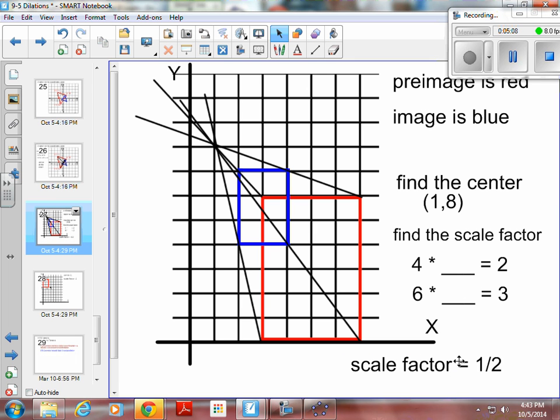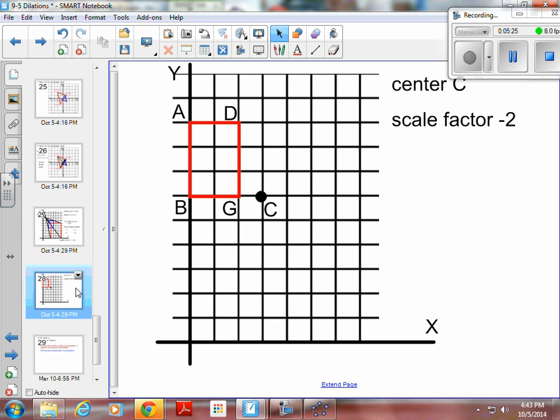Okay, so the center, you draw the lines. Where the lines all cross is your center. And the scale factor, you set up an equation and solve for the missing part. And the missing part is your scale factor. So what times one of the sides gives you the other side. What do you do when it's not centered at the origin? Now, you're going to have to draw segments and use your ruler or your distance formula.